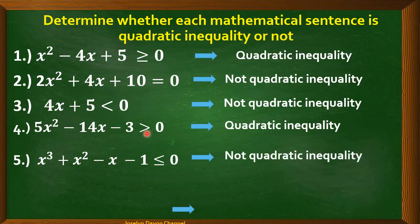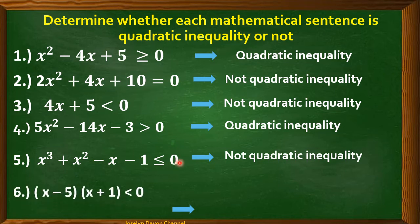Number 5: x³ + x² − x − 1 ≤ 0. This is not quadratic inequality. The degree is 3, and one of the characteristics is that the highest degree must be only 2.